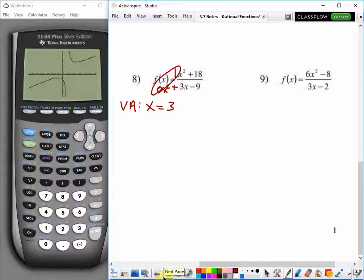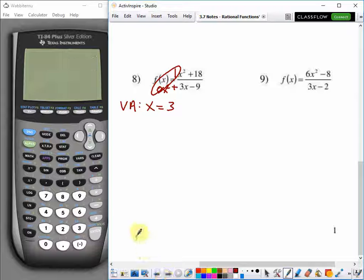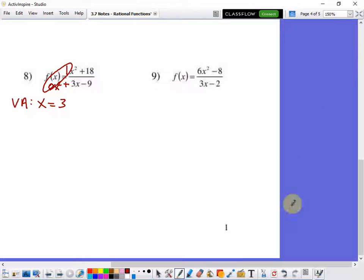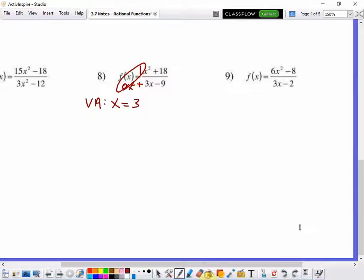But what's going to happen is there's going to be a slanted asymptote. And here's how I can find the equation of that slant asymptote. I'm going to divide 3x minus 9 into x squared plus 18. So we're going to use long division. 3x minus 9 goes into x squared plus... Now here's a trick. I've got to put in 0x. I've got to have all my descending powers. 0x plus 18. So x squared divided by 3x. That x is going to cancel.